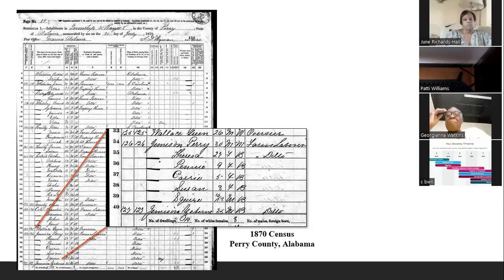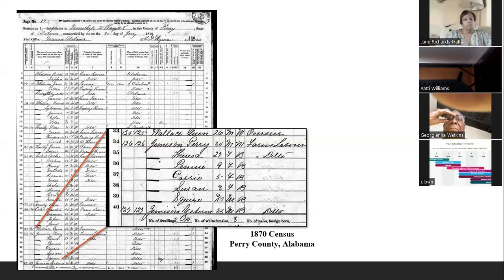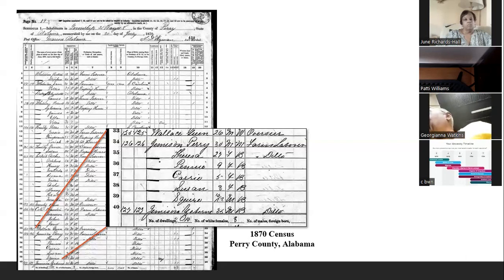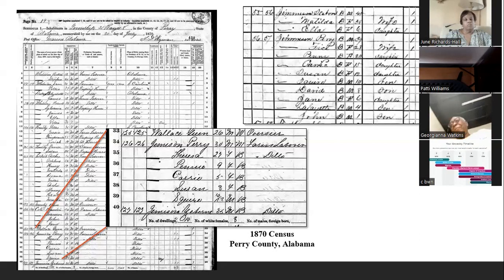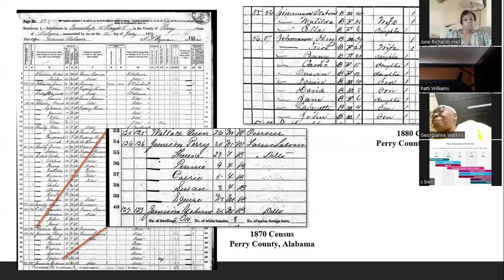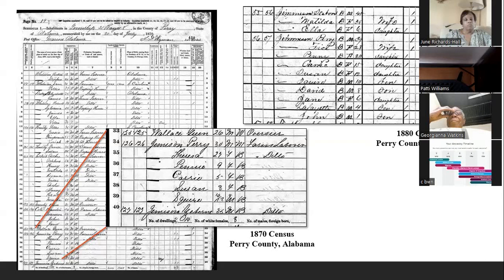If you look at the household before Perry in that census, you'll see a Green Wallace. In my research, I discovered that Green Wallace was the overseer for Samuel Jemison, who was the enslaver of Perry and his family. The story was unfolding through the FAN club. And in the 1880 census, the household before Perry is the household of Seaborn Jemison, which Perry said was his brother.